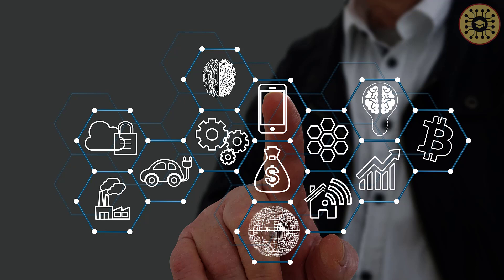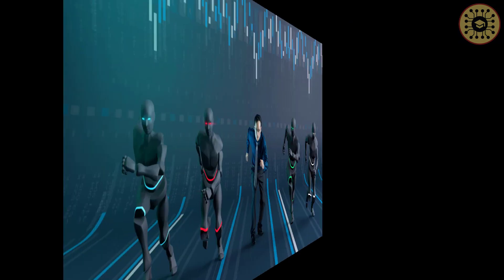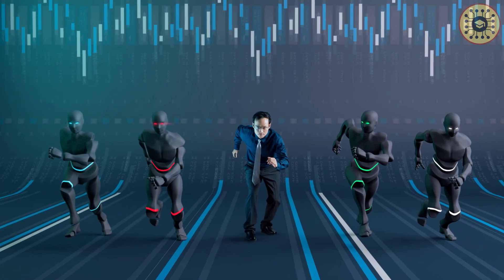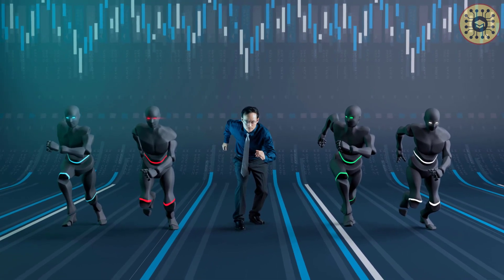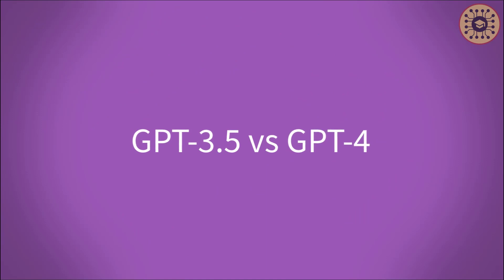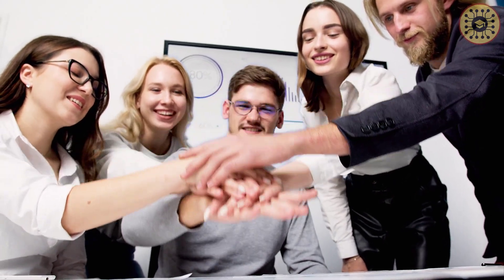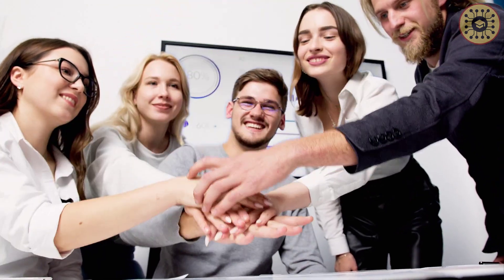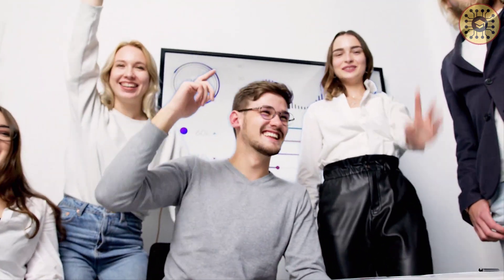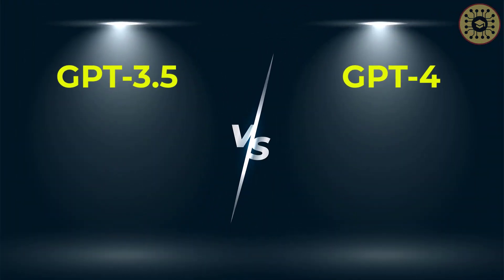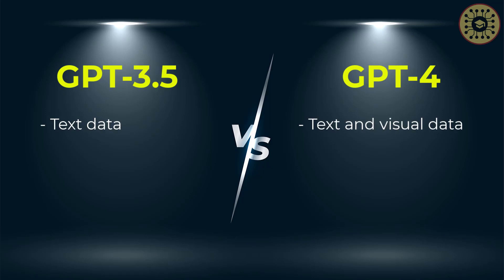The previous version of GPT-4 was GPT-3.5, and as you know, ChatGPT was developed using that model. Let's compare the GPT models to better understand the GPT family. The GPT family has accomplished the impossible. The two latest members are GPT-3.5 and GPT-4. The first key difference is that while GPT-3.5 only works with text data, GPT-4 can also work with visual and video data in addition to text.